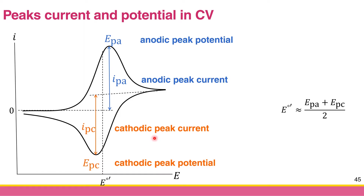Extra information we can obtain from the anodic and cathodic peak potential is that we can approximate the standard electrode potential, or formal potential, of the electroactive species as the midpoint — the average between the anodic peak potential and cathodic peak potential. So formal potential equals EPA plus EPC divided by 2. For example, if EPA is 0 V and EPC is −0.2 V, then the formal potential is −0.1 V.